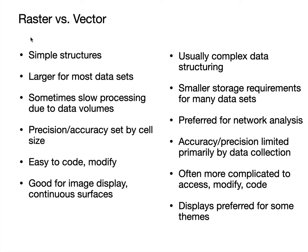For raster data, you often have larger data sets because you're recording where there's nothingness, so you have to cover the entire area. Especially if you have a small cell size, raster data can be quite large for most data sets. Vectors are smaller storage for many types of data. Now, this isn't entirely true — some data is more difficult to store in vector. For example, some land cover data sets with large homogenous areas may be larger in vector than in raster.